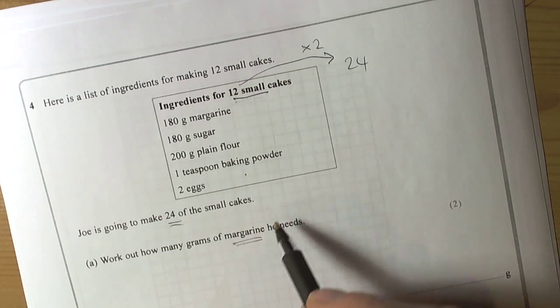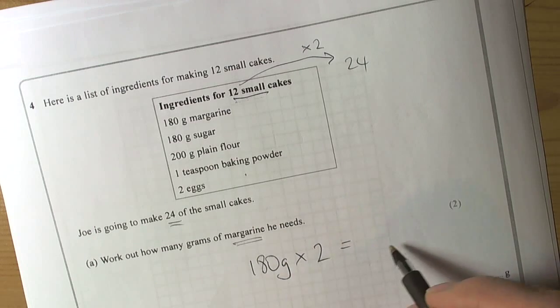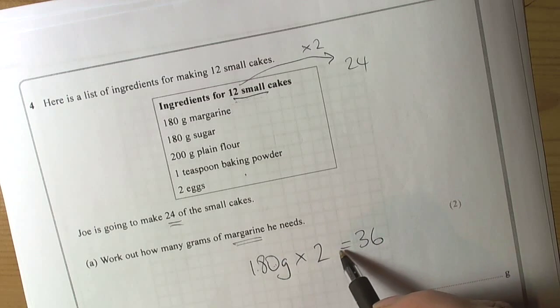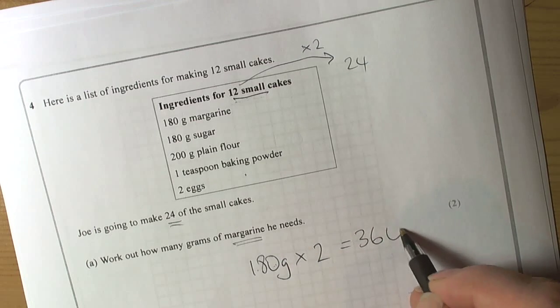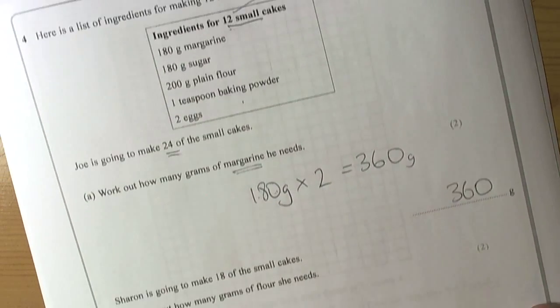Well they are only interested in the margarine. So we take the margarine figure and we double it up. Two 18's is 36. We have the extra 0 to multiply by 10 so it moves up one place to become 360 grams. So the answer there is 360 grams.